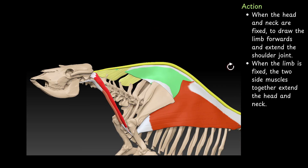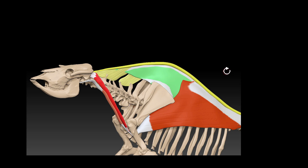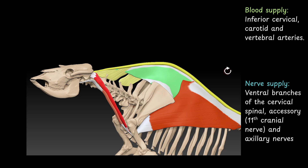Action of the muscle: when the head and neck are fixed, to draw the limb forwards and extend the shoulder joint; when the limb is fixed, the two sides together extend the head and neck. Blood supply: inferior cervical arteries, carotid and vertebral arteries. Nerve supply: ventral branches of the cervical spinal nerve, accessory — 11th cranial nerve — and axillary nerve.